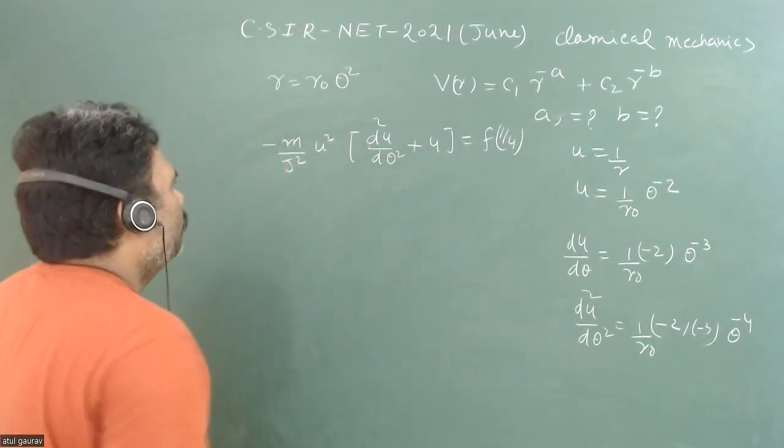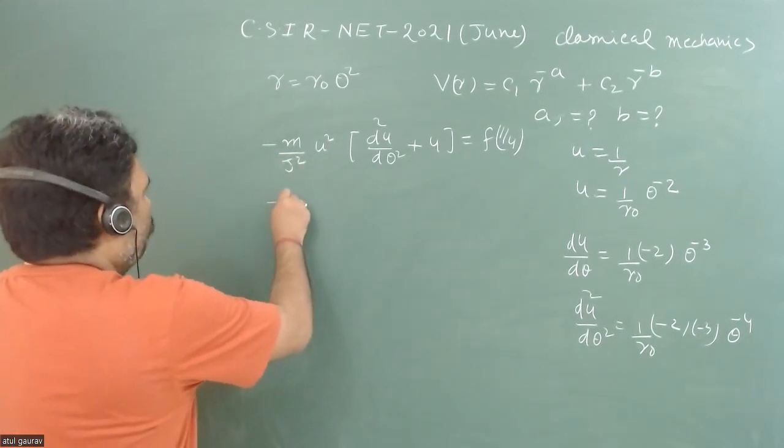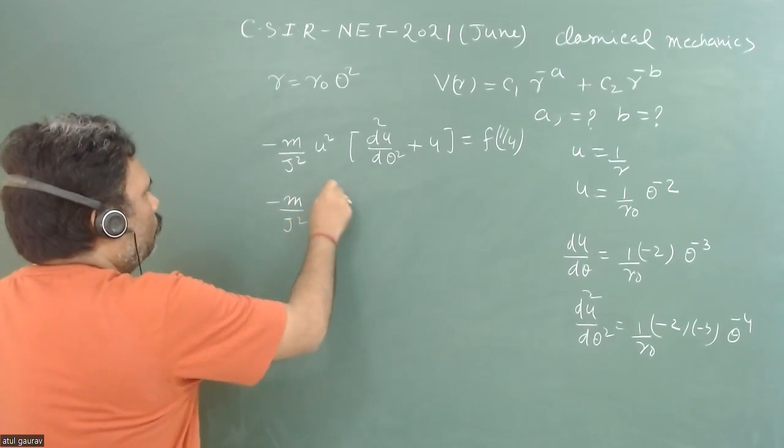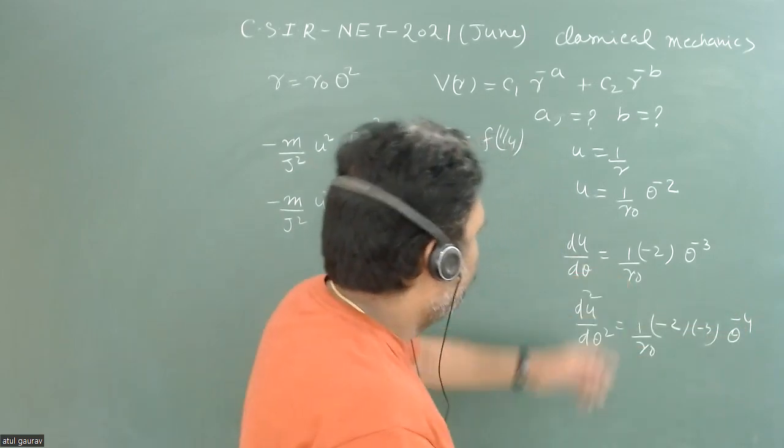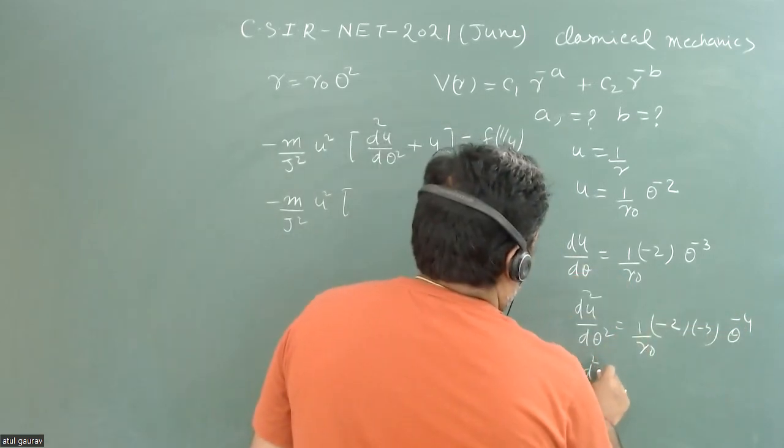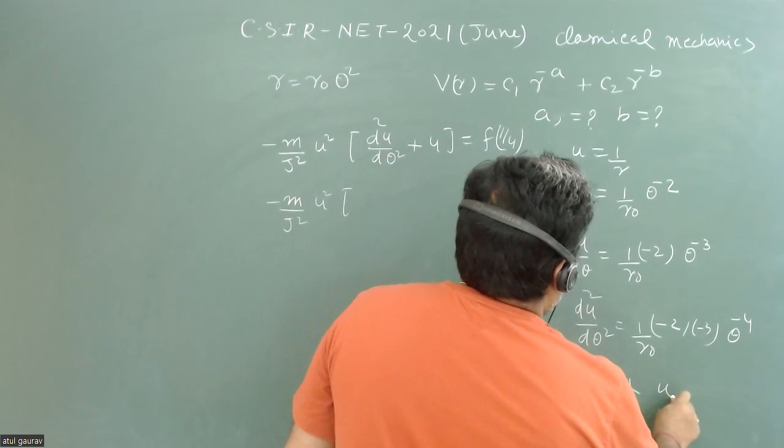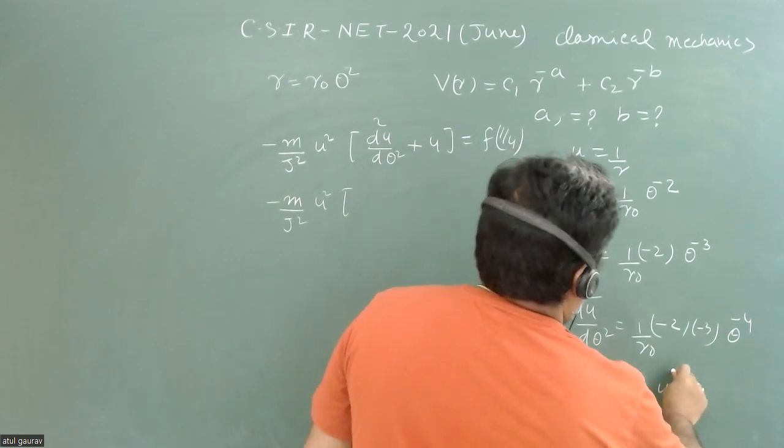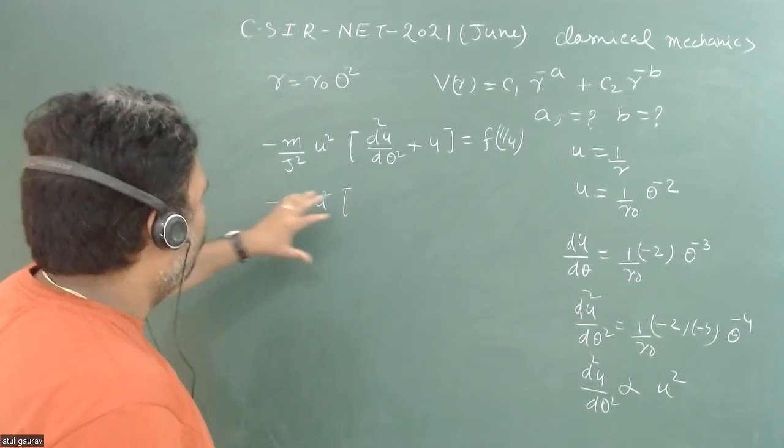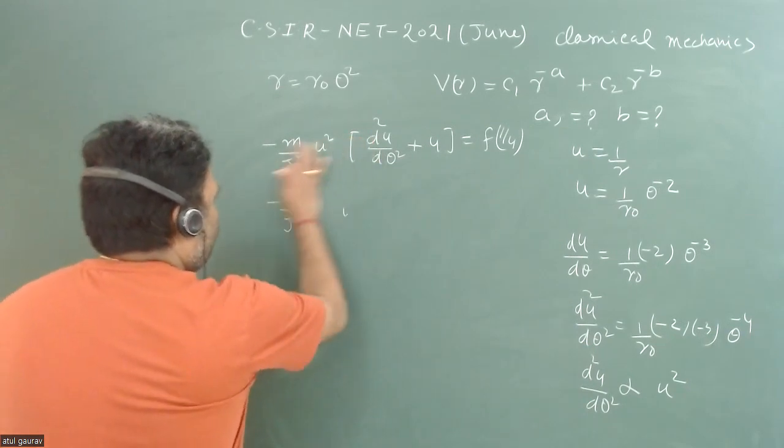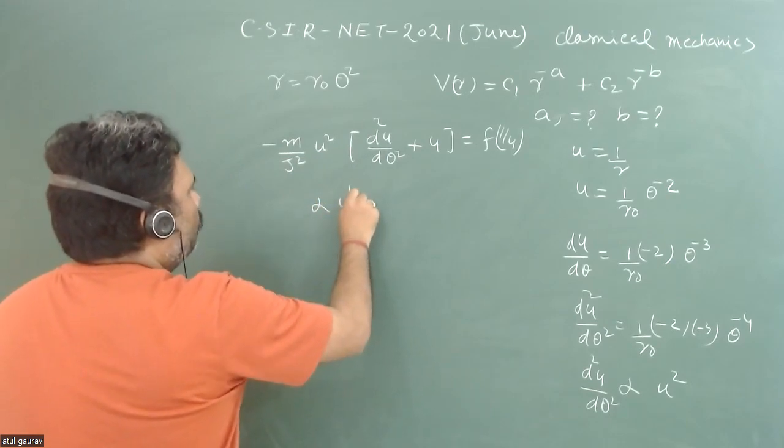So we can easily put it there, but we will just neglect this all constant. But just go for this. So we can go for 1 upon r naught j square u square. And here this theta minus 4 is proportional to, and this d square u upon d theta square is proportional to u to the power square. When we can assume all the constant together, then we can write this particular thing as some alpha u to the power 4.